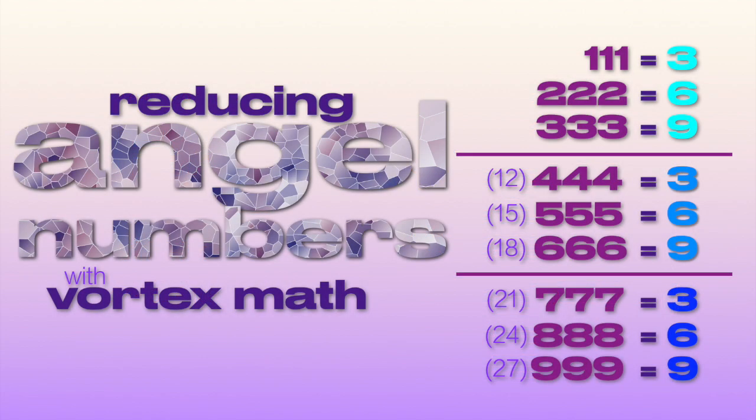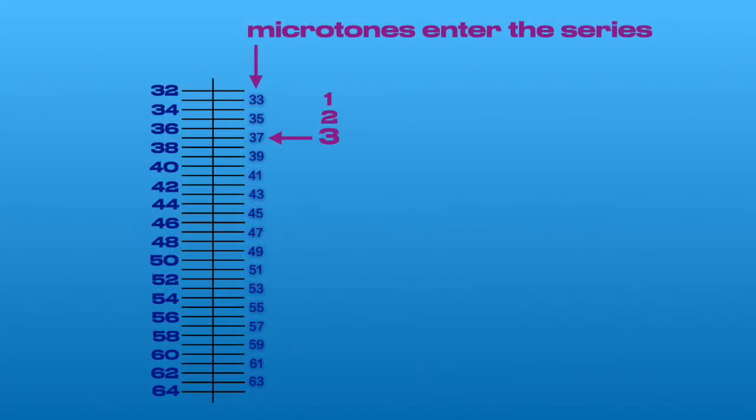111 Hz is also what's called an angel number frequency, 3 repeated digits. And all the angel number frequencies are generated by harmonic 37. Again, the power of 3 is highlighted, as 37 is the third microtone of the harmonic series.